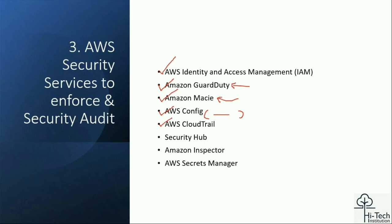CloudTrail — by default 90 days of logs are available, but the important factor is that beyond 90 days, we should store additional logs in an S3 bucket. That is the recommended approach. If anyone has unauthorized access, if anyone deletes a resource, or for any kind of event requiring more than 90 days of history, it is good to enable CloudTrail with extended S3 storage.